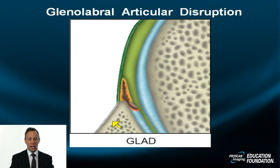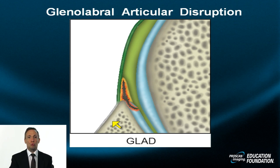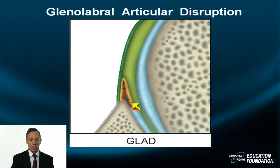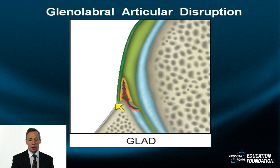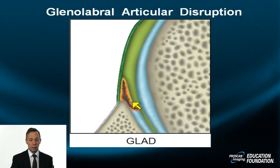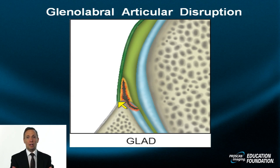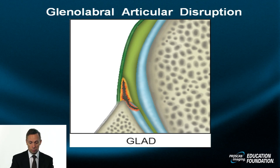The GLAD lesion — gleno-labral articular disruption, also known as a partial rim tear — involves the base of the hyaline cartilage. The interface between the labrum and hyaline cartilage is transgressed, with a linear partial rim tear involving the labrum but not extending through it. The capsule and periosteum are spared, and a small hinge is created so that in various degrees of rotation this component may wiggle in and out, producing a flap-like phenomenon and the sensation of functional micro-instability — a click, clunk, or snap.